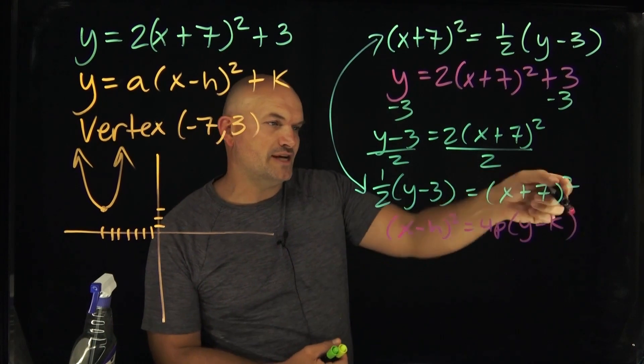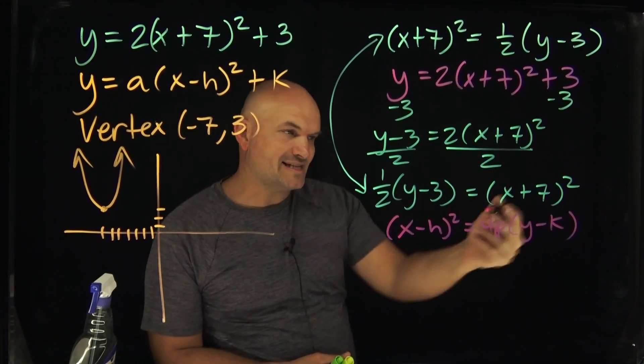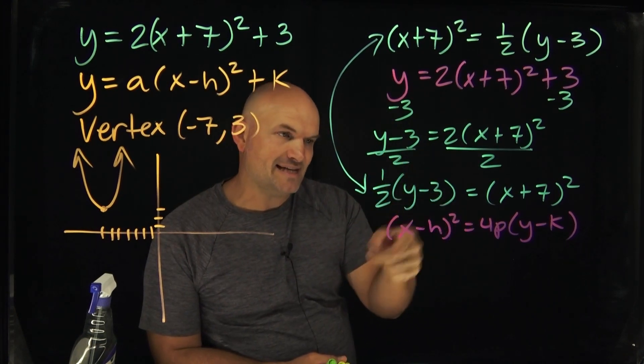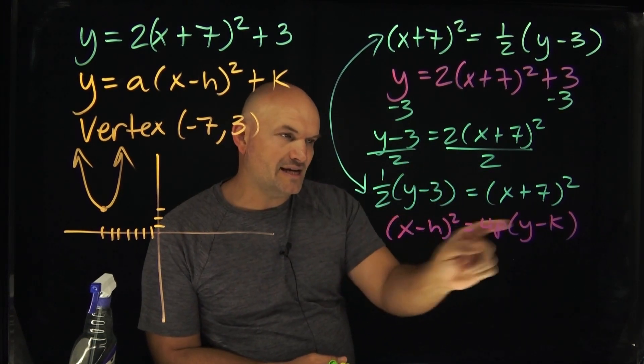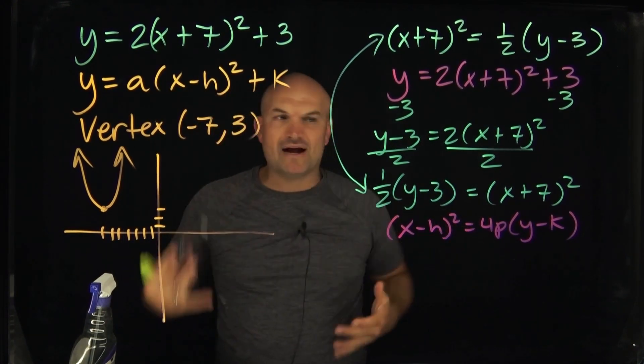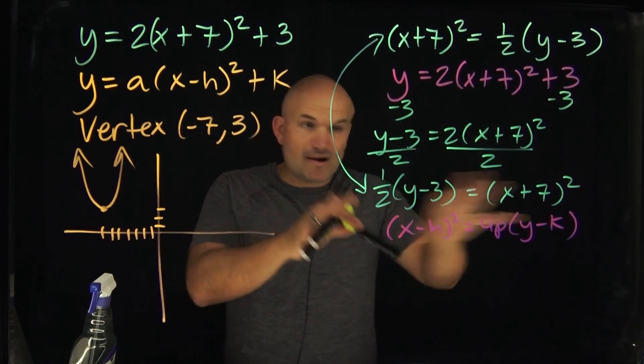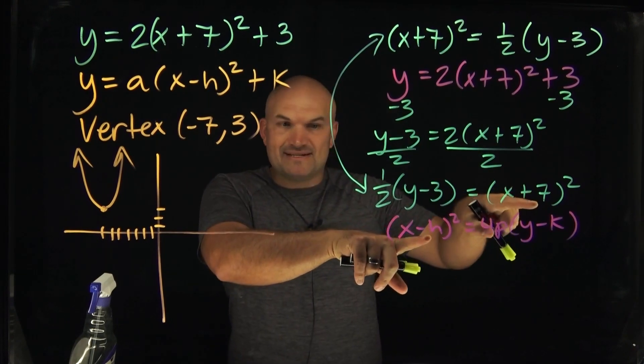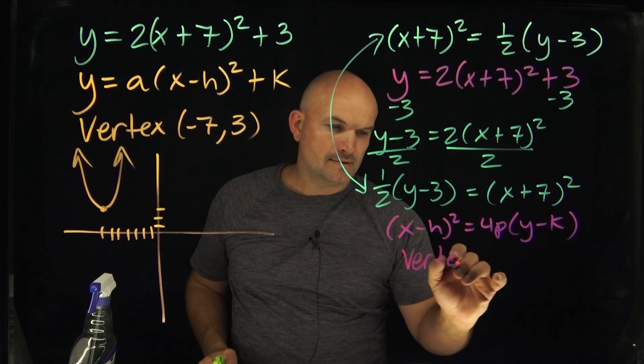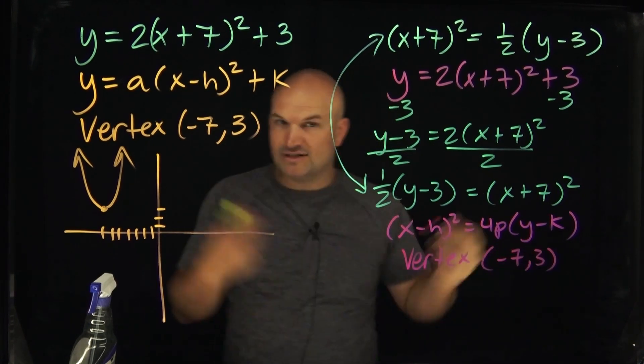4p is going to be the coefficient here of my linear term. In this case, it's going to be the y minus k. So we always want to make sure we have isolated our quadratic, the x minus h quantity squared. That's always going to be isolated. And then we have the 4p. Now, a lot of times students are like, well, what exactly is the p? How do you graph it in that case? Well, the cool thing is you're going to graph the exact same way. My h here is opposite of 7. So that's going to be negative 7 and we have 3, we have our vertex.